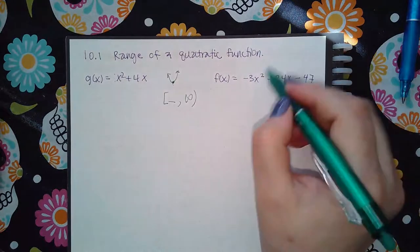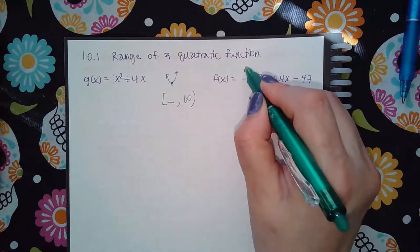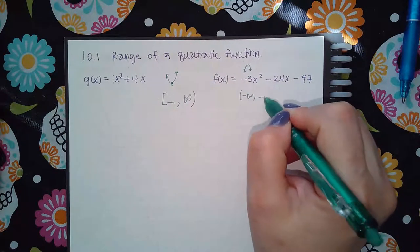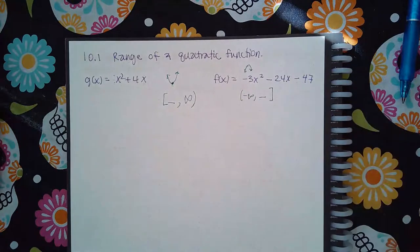This one is going downward because the a is negative, so I know that my range is going to be from negative infinity to whatever that y-value is of the vertex.